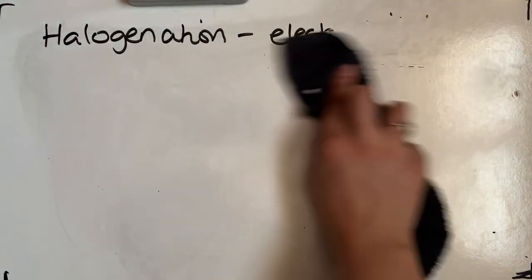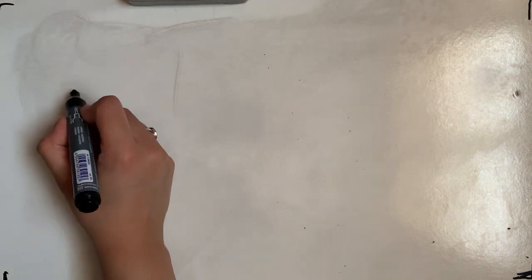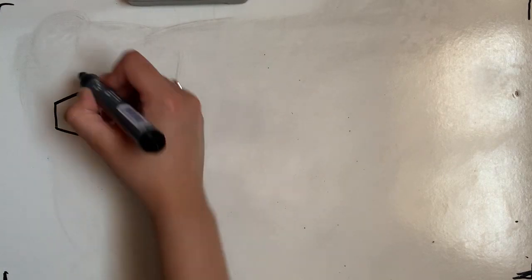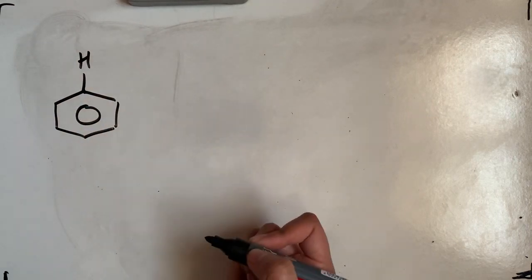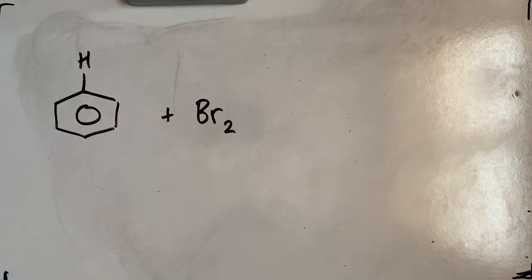In this one we're doing halogenation, so we're going to have a halogen that is going to substitute one of the hydrogens on a benzene ring. So the overall reaction is our benzene ring, one of the hydrogens on there, reacting with a halogen.